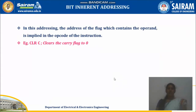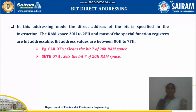Next is bit inherent addressing. For example, CLR means clear carry flag. It contains only the operand and it is implied in the opcode of the instruction. The address of the flag is implied in the opcode. Bit addressing means we need to be specific with a particular bit — for example, SETB 07H sets the seventh bit of register B to 1. You can also use it with PSW: SETB PSW.3 or CLR PSW.4. Using these instructions, it is possible to set or clear a specific bit in a particular register.